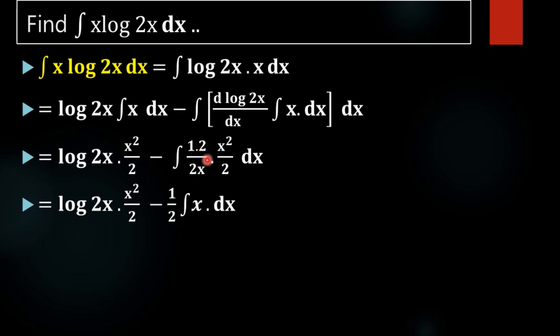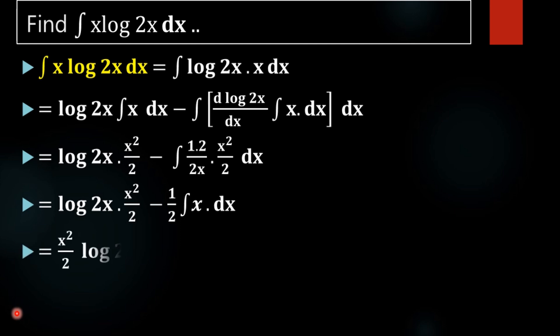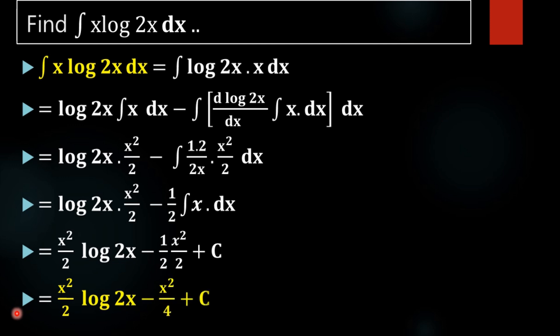After cancellation, this 2 and this 2 get cancelled, this x and this x get cancelled, but then x will remain. Taking 1/2 outside we get integral of x dx, and integral of x is x²/2. So the final result is x²/2 · log(2x) minus x²/4 plus C.